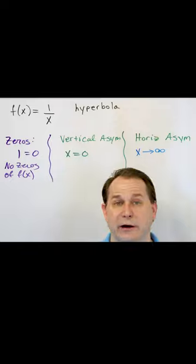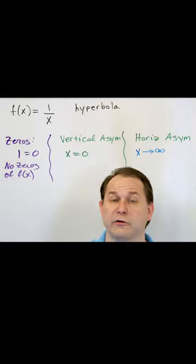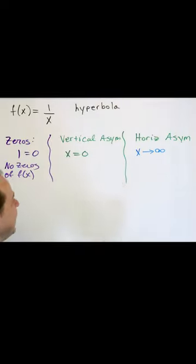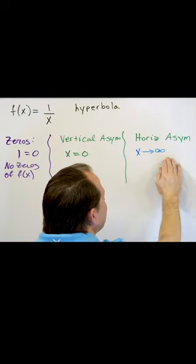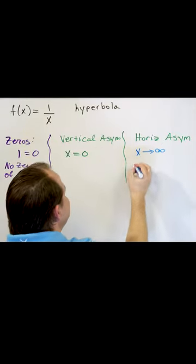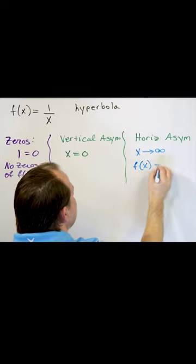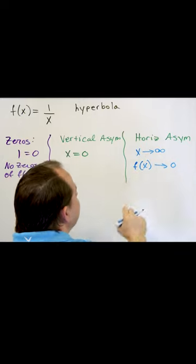The denominator gets bigger and bigger. The entire fraction gets smaller and smaller. So what we say is that as x actually gets bigger and closer to infinity, f approaches zero, it gets closer and closer to zero.